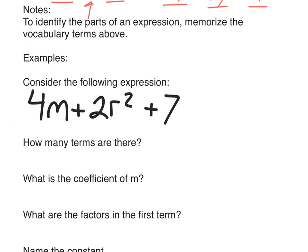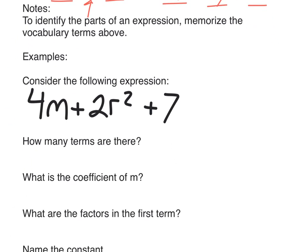Enough with vocabulary. Here's my excellent notes. To identify the parts of an expression, memorize the vocabulary terms above. There's not really a process to identifying parts of an expression. You just have to know what they are. This is an example I want you to copy into your notes. Write the whole thing. Consider the following expression. Write down 4m plus 2r squared plus 7.